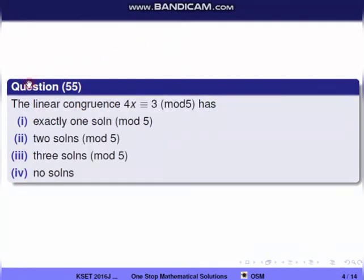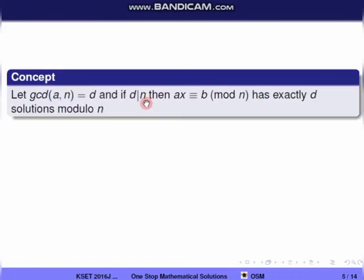Question 55: The linear congruence 4x ≡ 3 mod 5. To check how many solutions this has, we use the concept: gcd(a, n) = d, and if d divides b, then the congruence ax ≡ b mod n has exactly d solutions mod n.